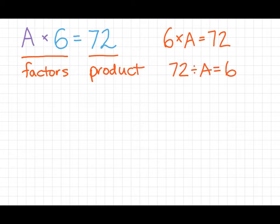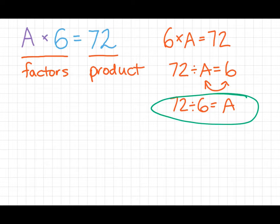The first might be 72 divided by A equals 6. Again, that doesn't help us. But remember that we can swap our factors. And you may have already figured this out, but this is the problem that we're looking for. 72 divided by 6 will give us A. So if you are familiar with fact families, if you understand them, you can see that you can rearrange this problem to find out what A is.